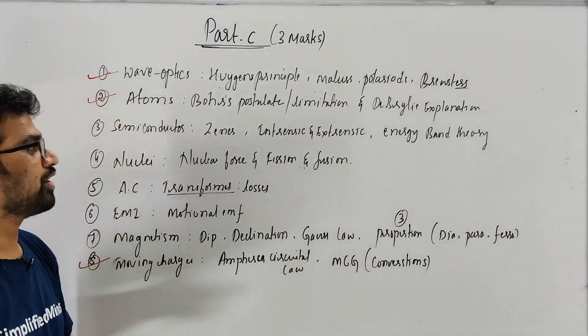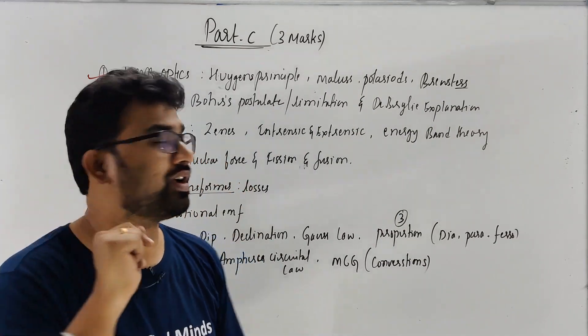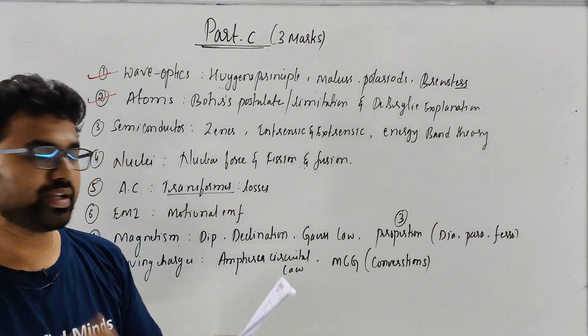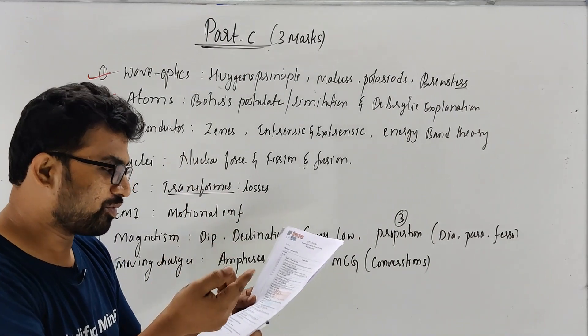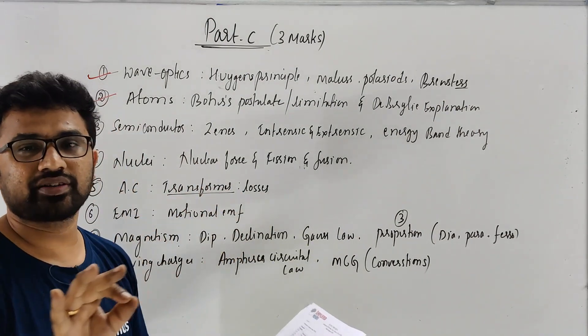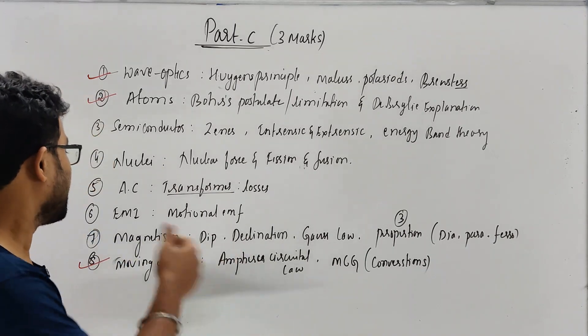Nuclear laws, nuclear force. I will ask you to write the three properties of nuclear force. Nuclear fission and fusion is very easy, difference model. Here is the question - transformer losses. See, in AC, there is no other question. But I am just telling you, just go to transformer losses. Three energy losses. How we can overcome this. This is theory and easy questions.